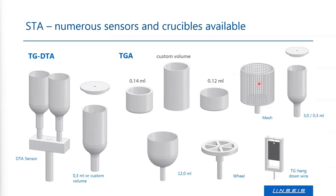The mesh-type sample holder is used if you want to observe reactions of your samples with the reaction gas. Wheel-type sample holders can be used for larger samples. We also have hang-down sample holders used for oxidation or reduction processes of metals, for example, which can be monitored.